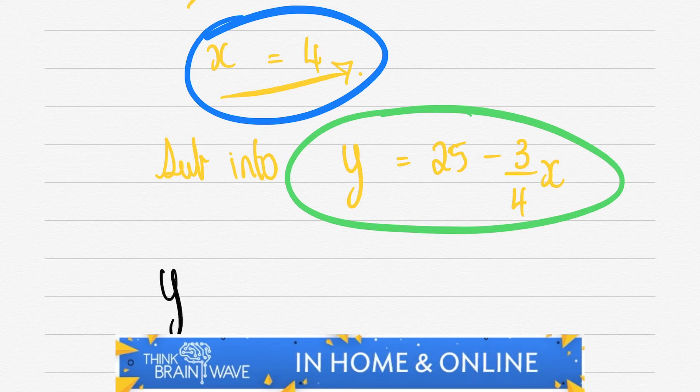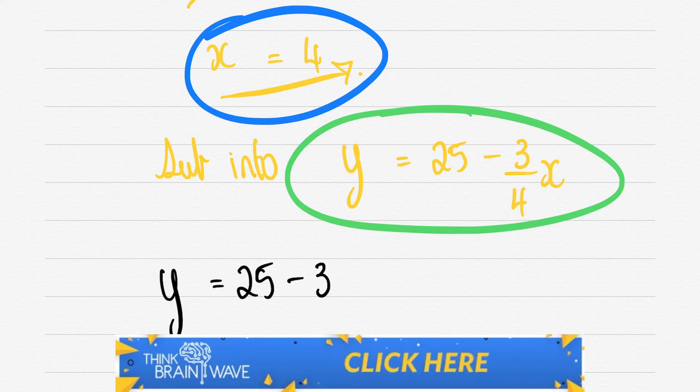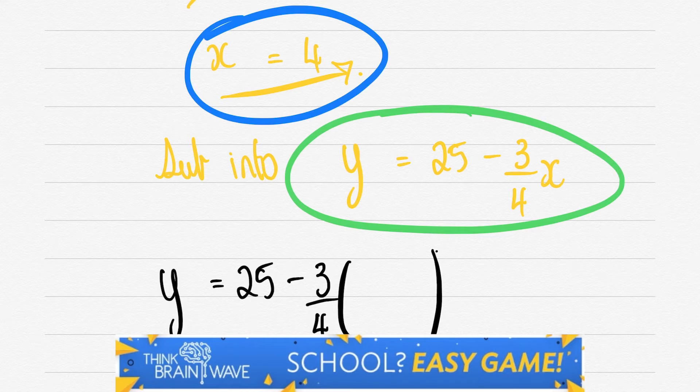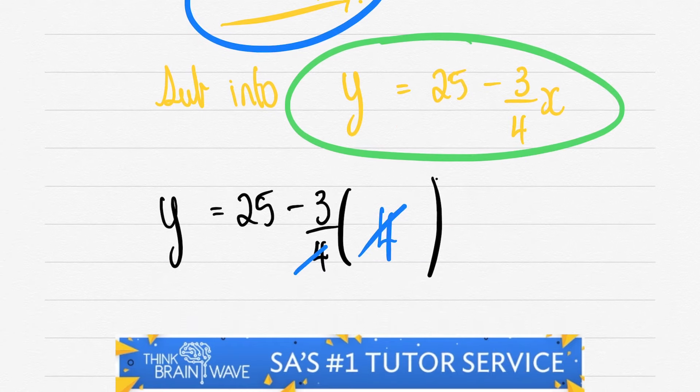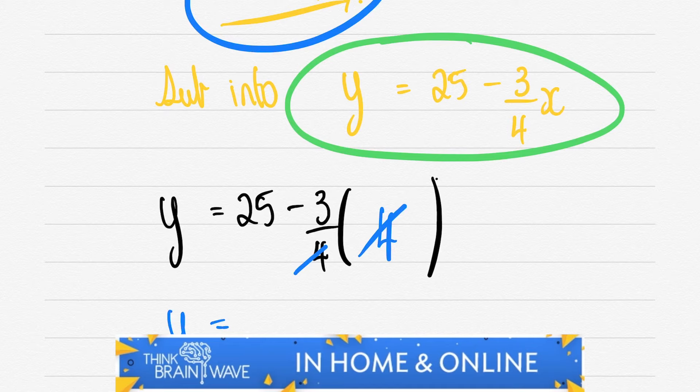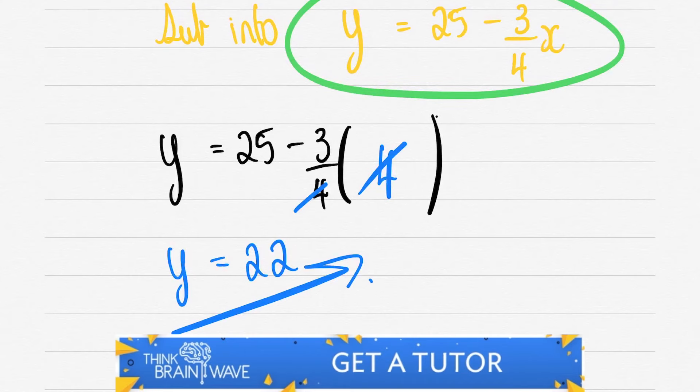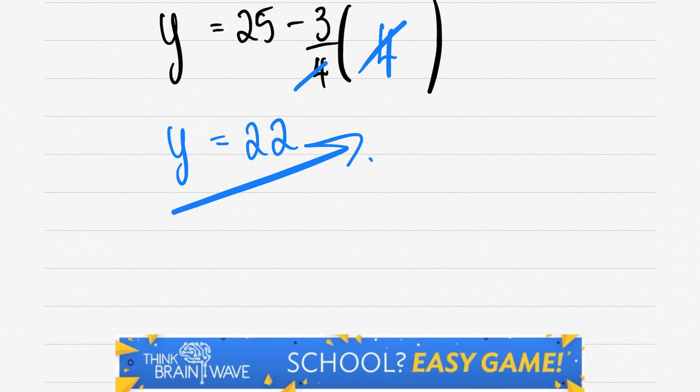So far we've figured out what x is by itself and now let's plug that 4 into this equation. So 25 - 3/4(4). The 4s cancel leaving you with 25 - 3 which is 22. So now we have found our x value and our y value.